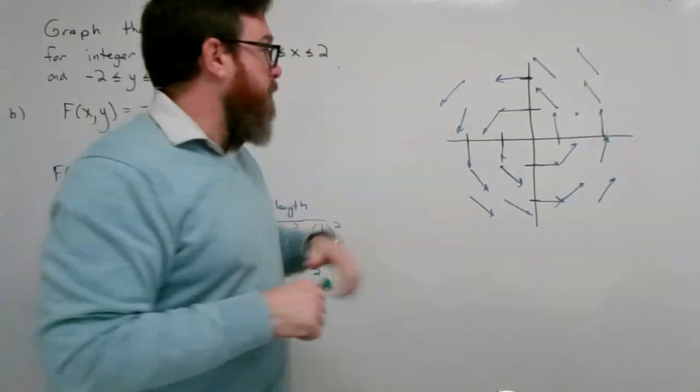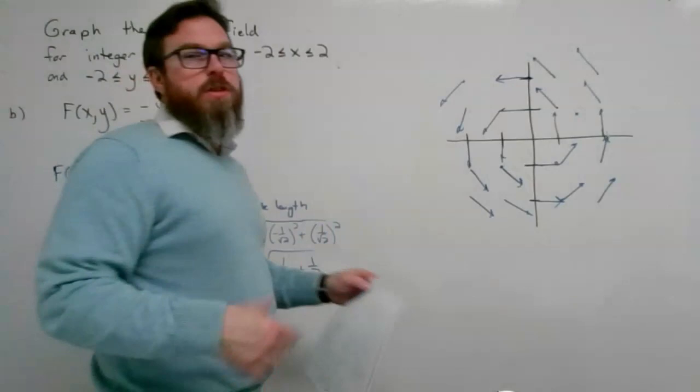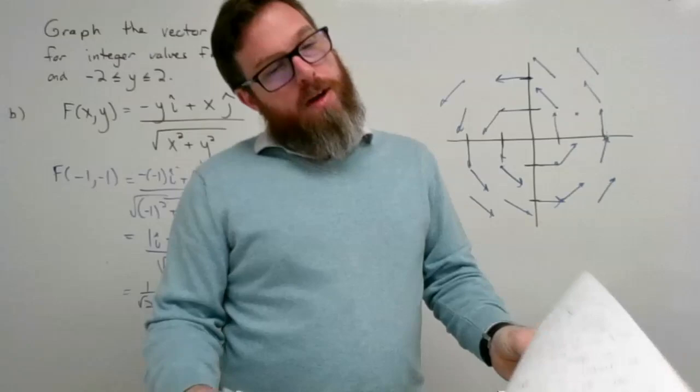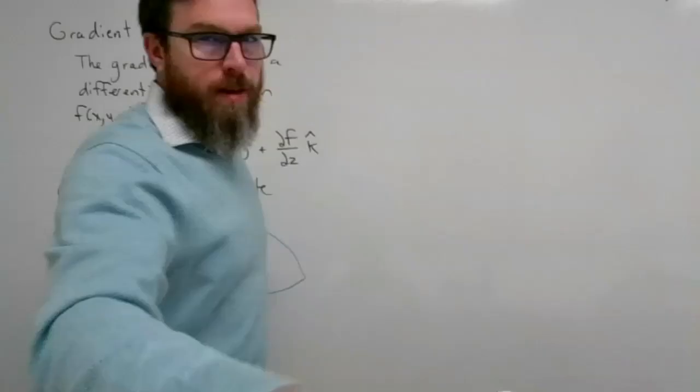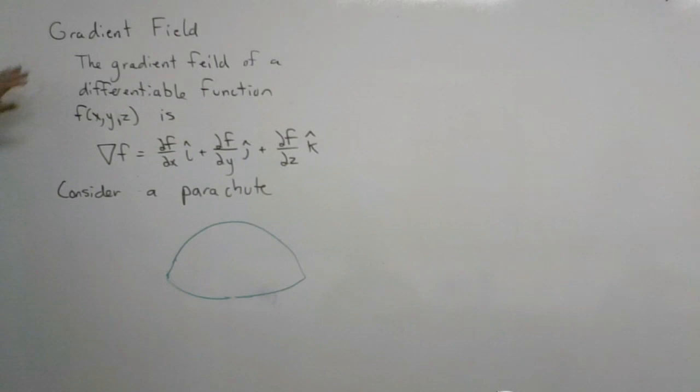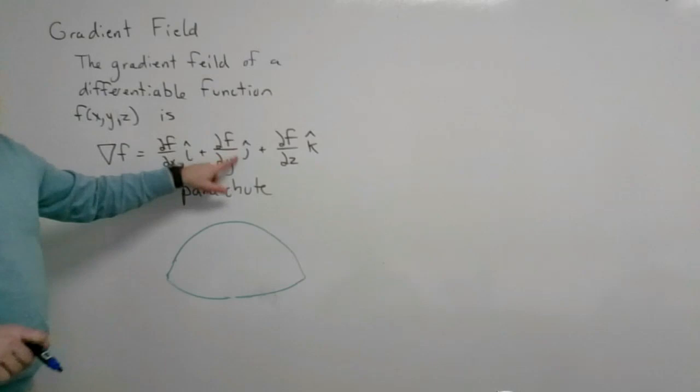One of the most common vector fields we create is called a gradient field. The gradient field of a differentiable function f(x, y, z) is the gradient of f: the partial derivative of f with respect to x in the i direction, the partial with respect to y in the j direction, and the partial with respect to z in the k direction.